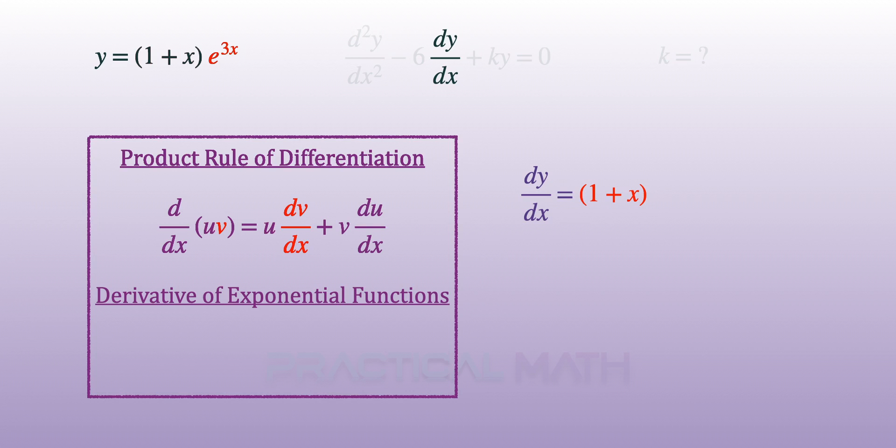For us to differentiate e to the power of 3x, let's take a look at the derivative of exponential functions. Differentiating e to the power of fx will give a result of e to the power of fx multiplied by f prime of x, where f prime of x is the differentiation of the power fx.